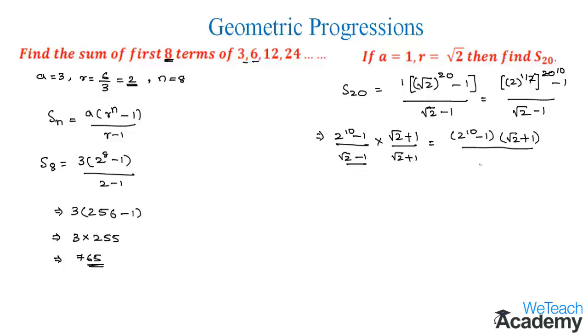As we observe that the denominator is in the form of the formula a plus b times a minus b, we can write this as root 2 whole square minus 1 whole square. This we can write as 2 power 10 minus 1 times root 2 plus 1 divided by root 2 whole square.